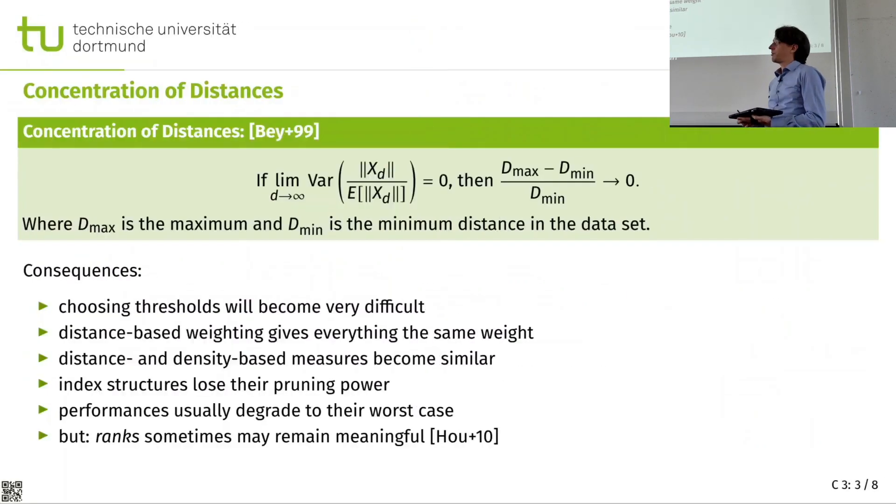Now the second effect that plays a role here is what is called the distance concentration effect. And it was formalized and proven by Beyer that in certain preconditions, data sampled from one distribution that has the property that as an increased dimensionality, the variance of my vectors compared to the expected value goes to zero, which is actually true for a lot of synthetic data generation processes.